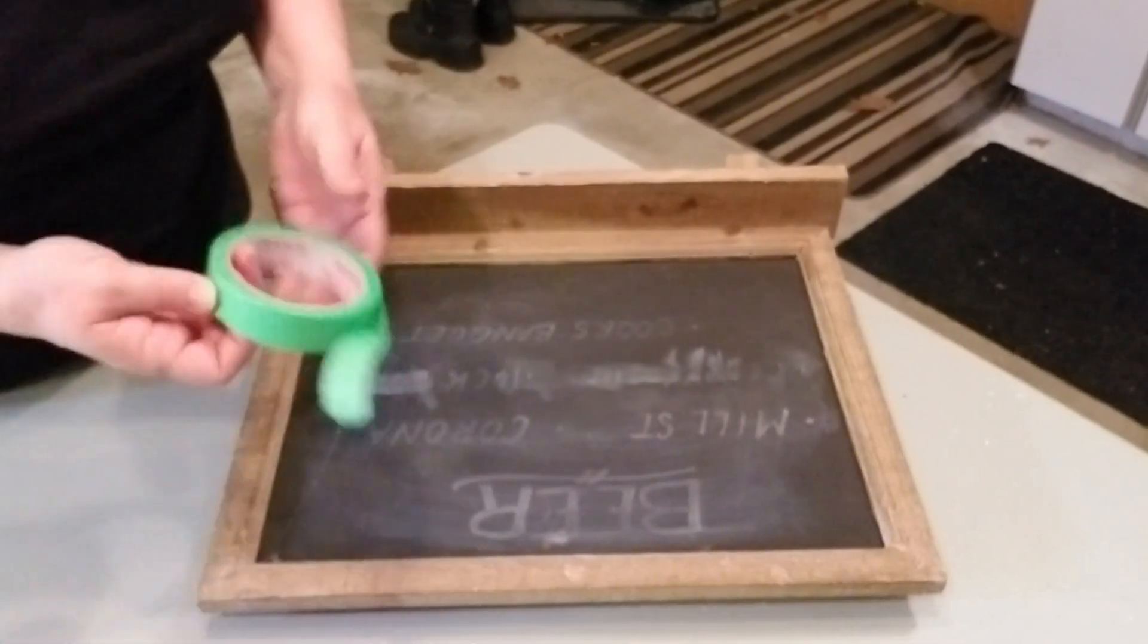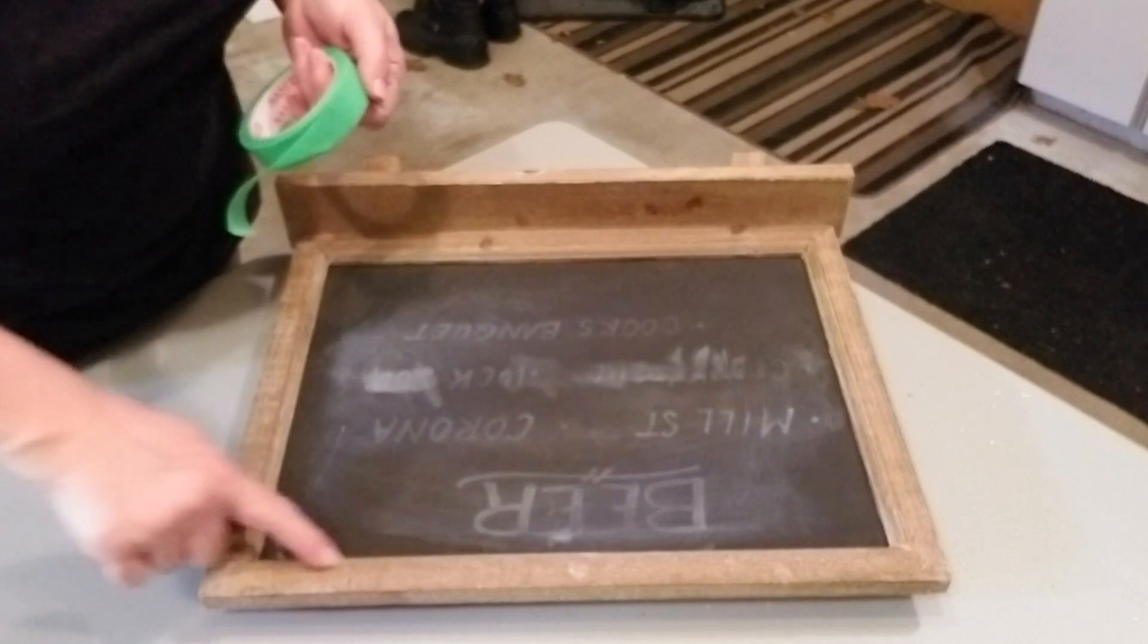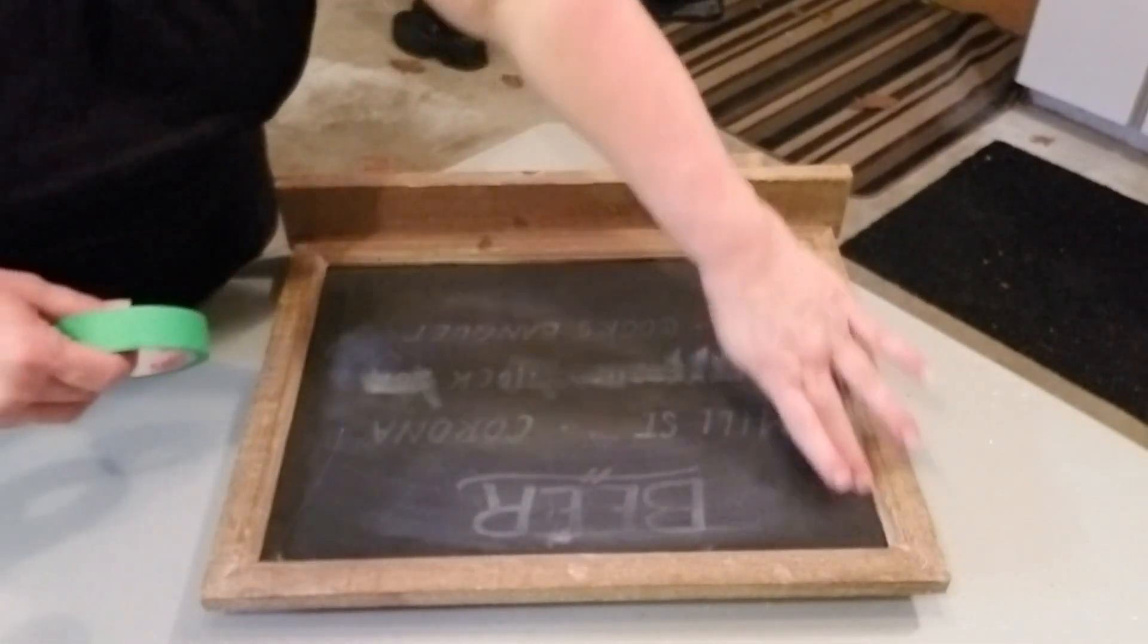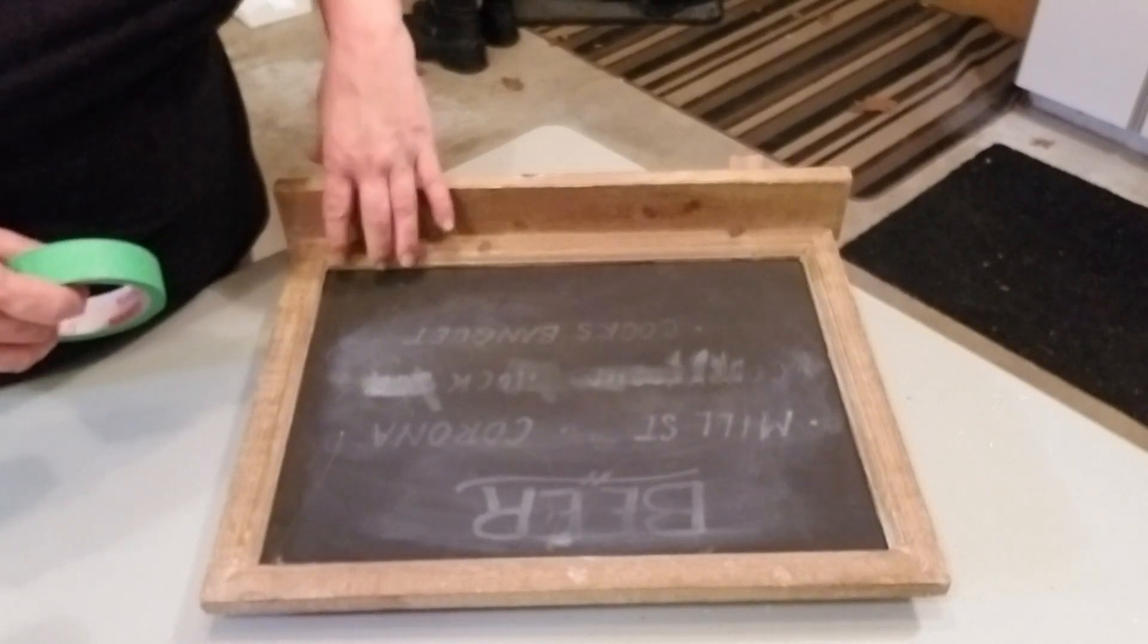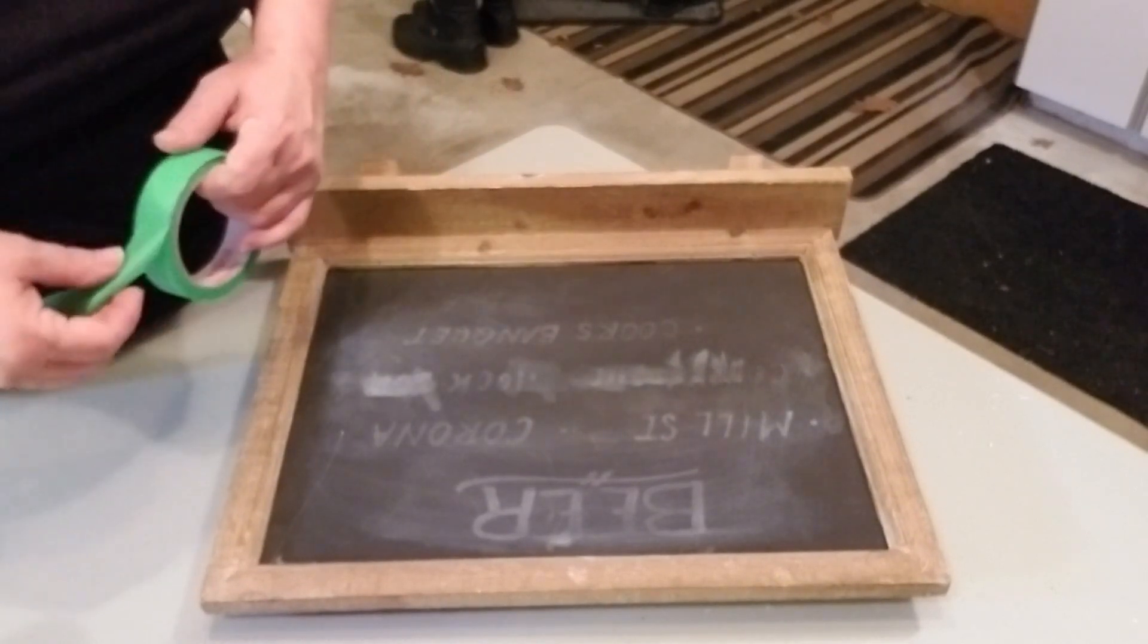First thing I'm going to do is use some painter's tape and I'm going to just tape off the chalkboard itself. I don't want the wood to get any paint on it and then I'll be starting to do some paint.